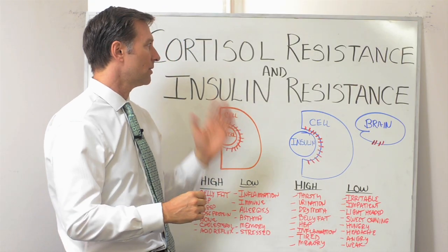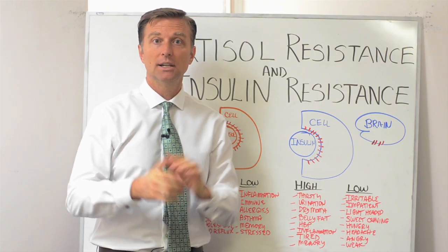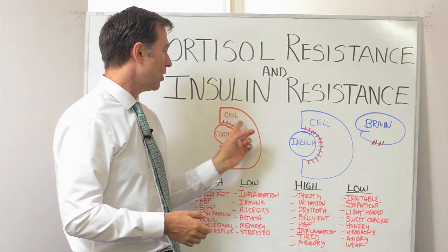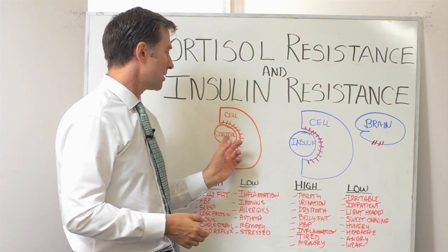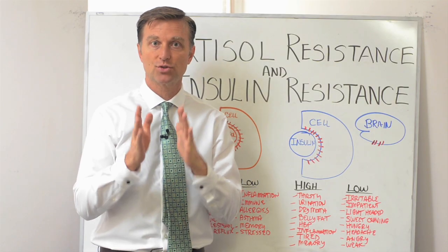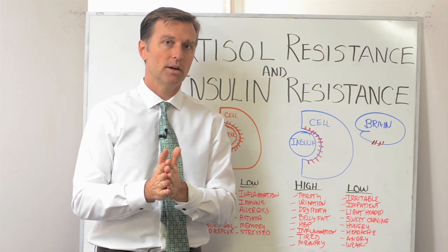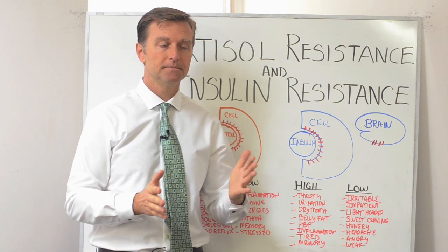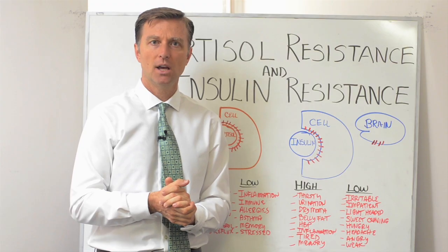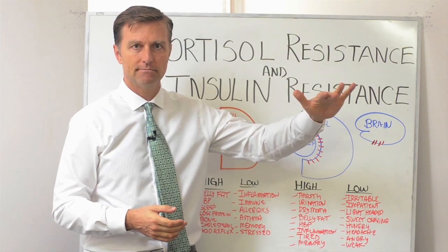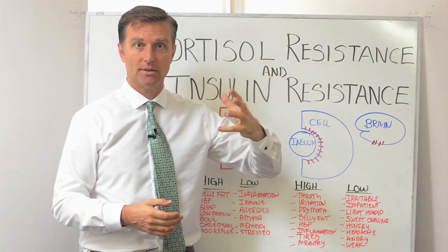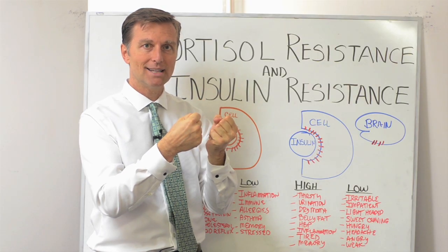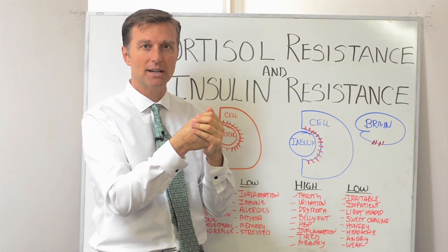Let's first talk about the adrenal gland. There are two glands on top of the kidney, and the hormone we'll talk about is cortisol. Cortisol is a stress hormone — it counters and deals with stress. When you have stress over a long period of time, the receptor that's supposed to receive that hormone becomes downgraded and tends to block that hormone. It's like a protective mechanism.